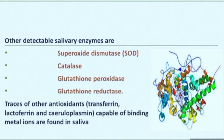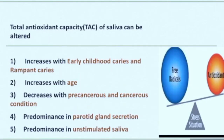Traces of other antioxidants such as transferrin, lactoferrin, and ceruloplasmin, which are capable of binding metal ions, are found in saliva. Total antioxidant capacity of saliva can be altered. It increases with early childhood caries, rampant caries, and with age.